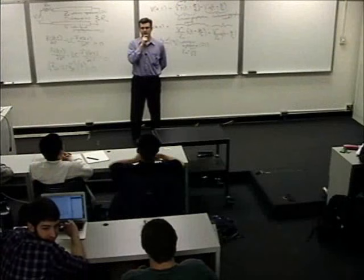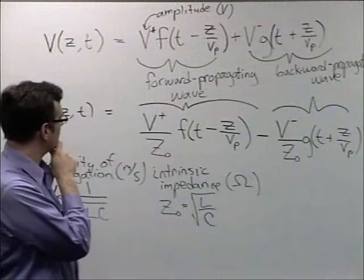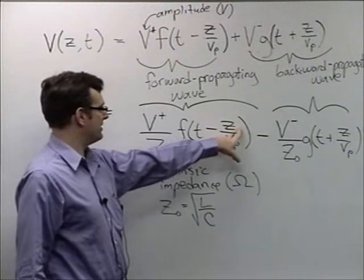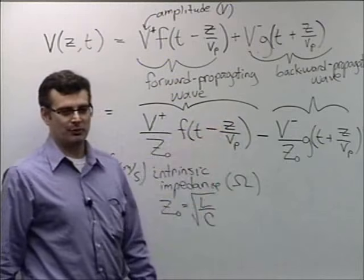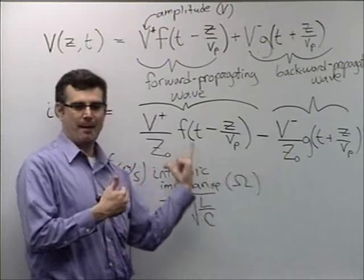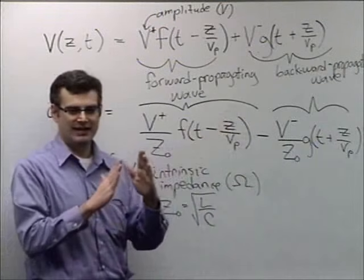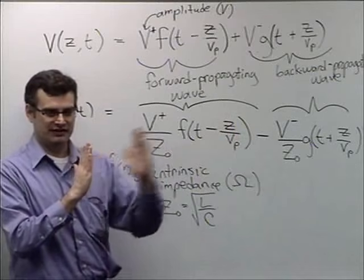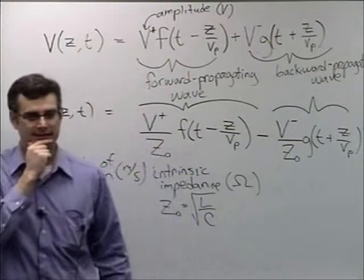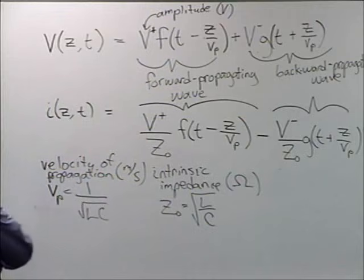A student question: in the generic form, there's Z₀ as the intrinsic impedance, but also a lowercase z in the equation. Little z is position down the transmission line. Capital Z₀ is the intrinsic impedance. So little z equals zero is at the front of the line, z equals the length d is at the end, and z = d/2 is halfway down.